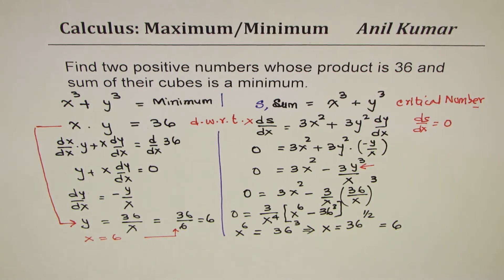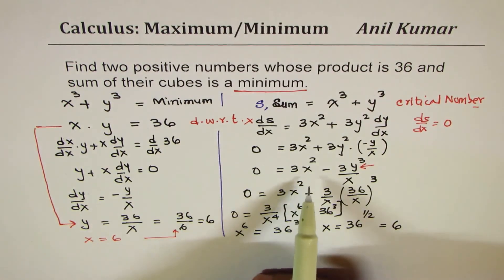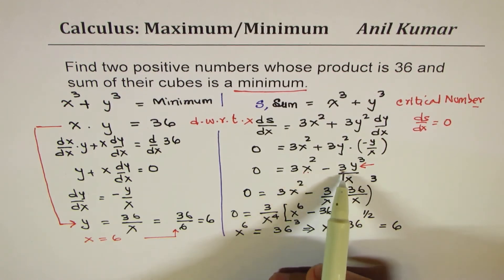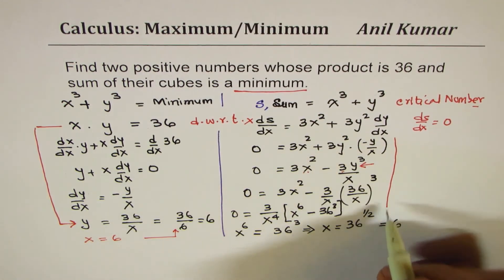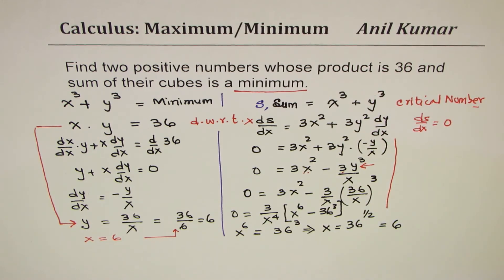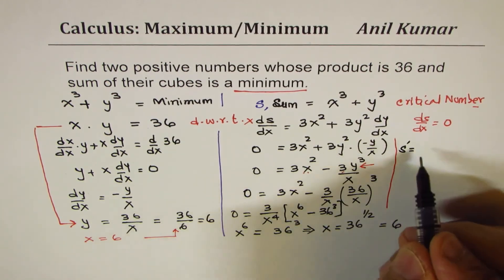So the numbers are 6 and 6. Now how do we say that it will result into a minimum? That's another important thing to understand. Now if I take the derivative of this function here, which may be written like this, let me just show you on the right side. So what we have here is that the first derivative of the sum is 3x² minus all this, which is a constant - let's say 3 times 36³.